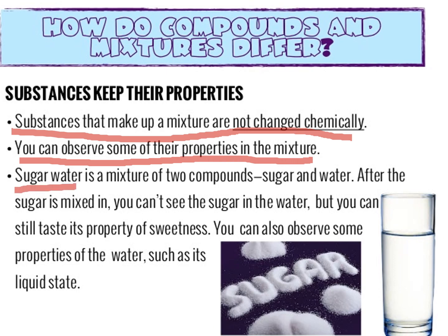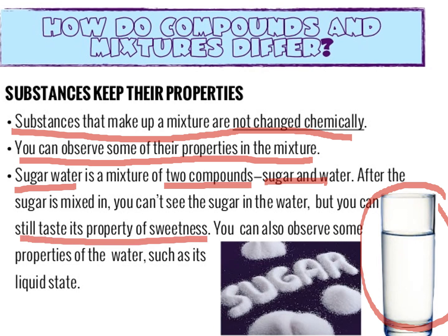For example, sugar in water. These two — sugar and water — are compounds. When you dissolve them together, you can no longer see the sugar. But you can still taste the properties of sugar, which is its sweetness. You can also identify the liquid state of the solvent. That is why substances do not change their properties when you mix two substances together.